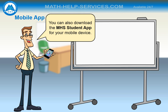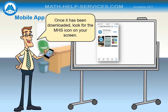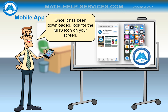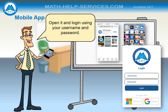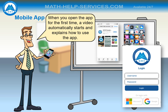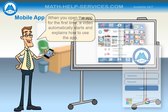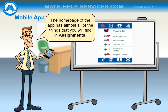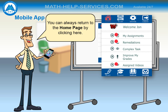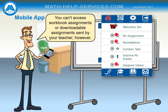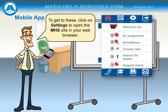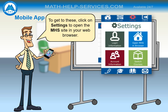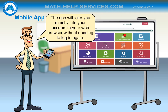You can also download the MHS student app for your mobile device. Once it has been downloaded, look for the MHS icon on your screen. Open it and log in using your username and password. When you open the app for the first time, a video automatically starts and explains how to use the app. The home page of the app has almost all of the things that you will find in Assignments. You can always return to the home page by clicking here. You can't access workbook assignments or downloadable assignments sent by your teacher on the app, however — click on Settings to open the MHS site in your web browser. The app will take you directly into your account in your web browser without needing to log in again.